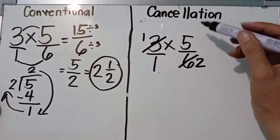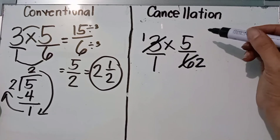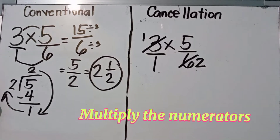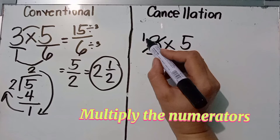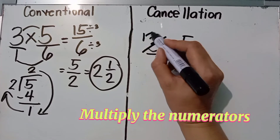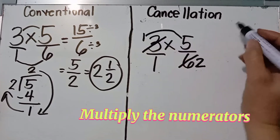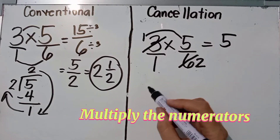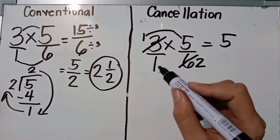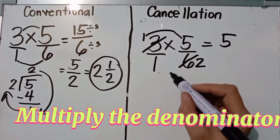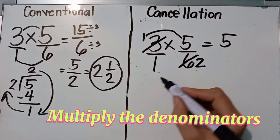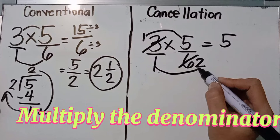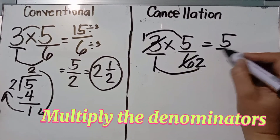Since there are no more common factors, we multiply the numerators: one times five equals five. Then we multiply the denominators: one times two equals two. So our result is five over two.